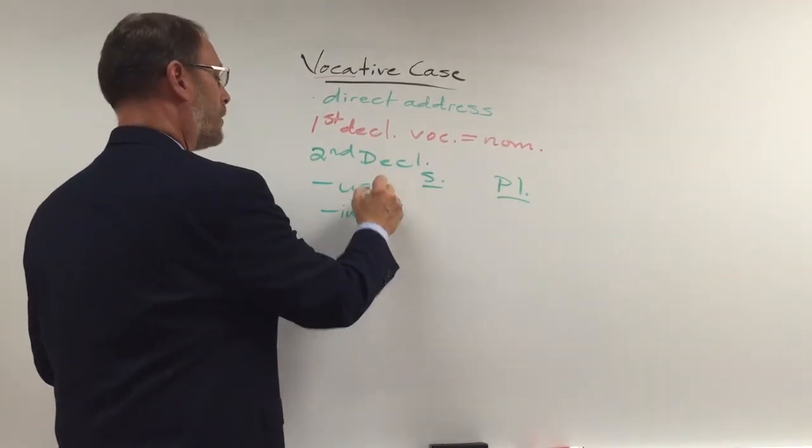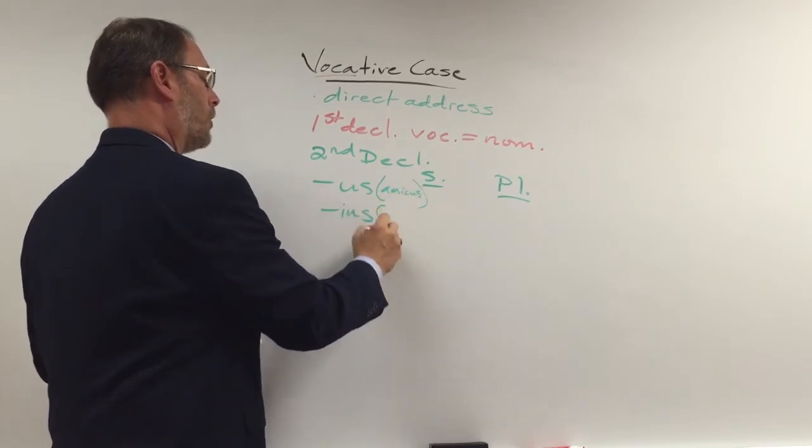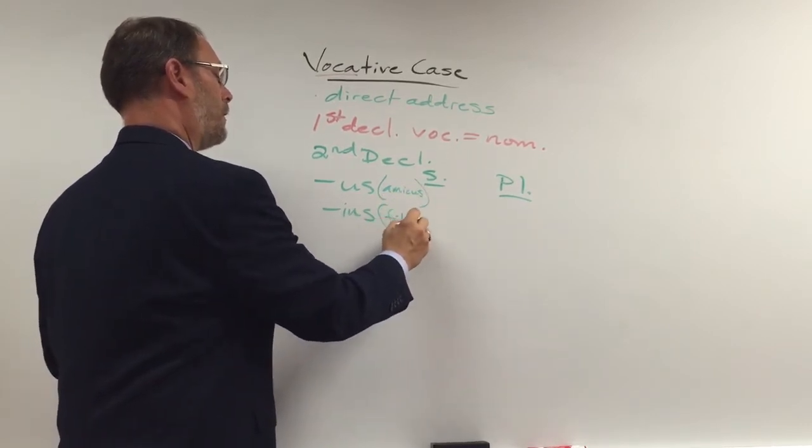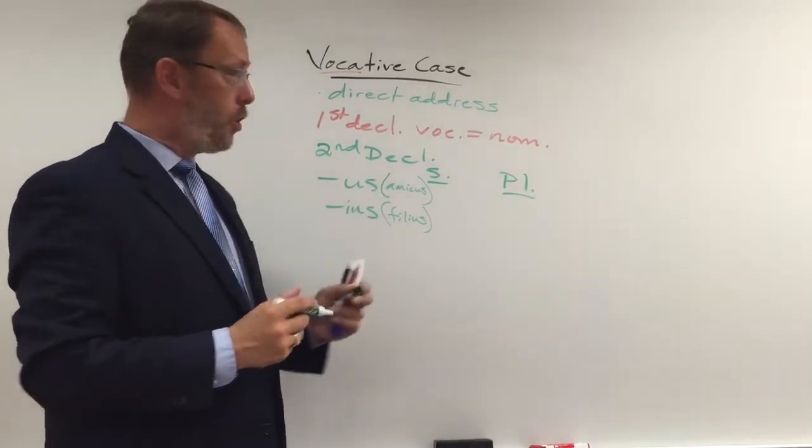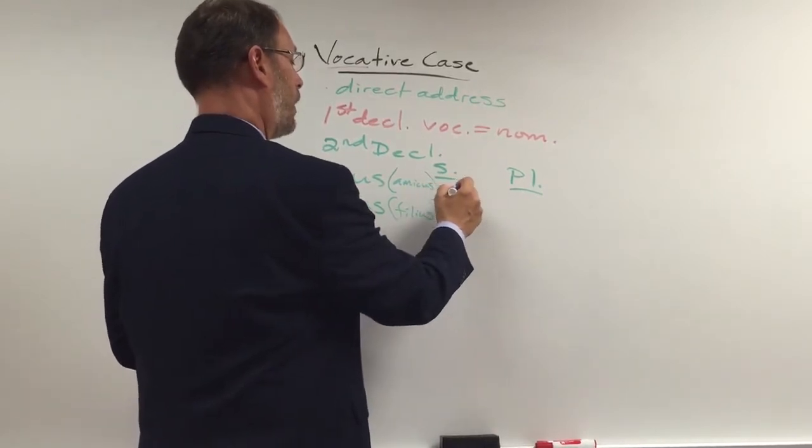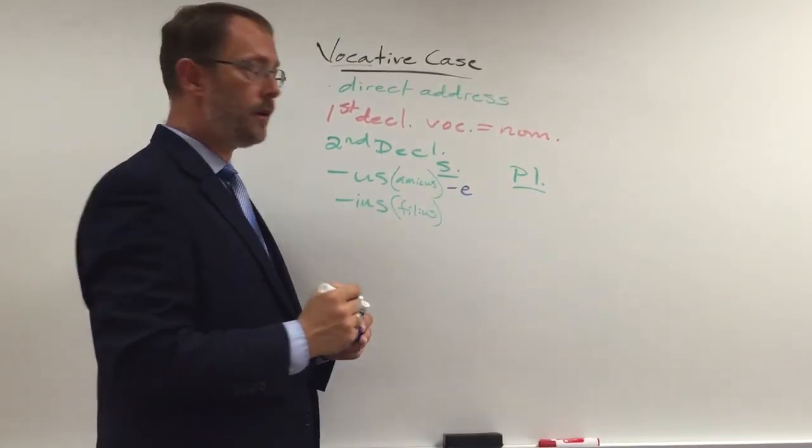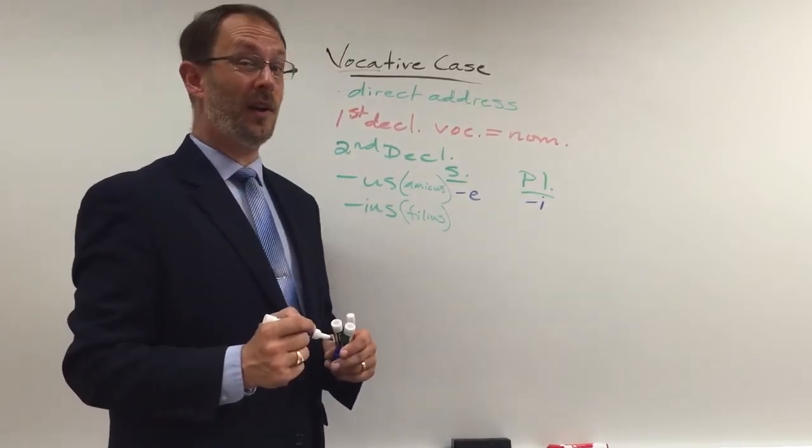Now think about this. Words like, and we'll just use as an example, amicus, right? Or words like filius, the Latin word for son. If it's a US noun and you want to talk to one person, you change the US to an E. If you're addressing more than one, you change the US to an I.